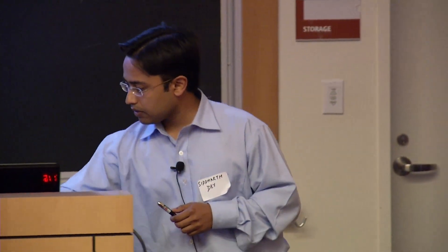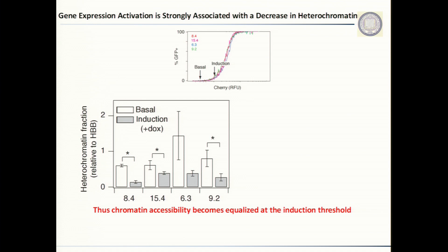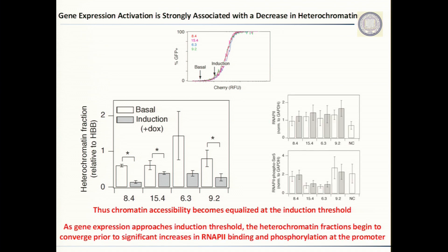We performed this for different epigenetic modifications and different clones and found a strong correlation between the heterochromatin fraction and the induction threshold. We also hypothesized that at the point of induction, the chromatin should be similar across all different clones when transcription just starts getting initiated. When we take a subset of clones that under basal conditions have different DNase-1 sensitivity values, at the point of induction the chromatin tends to get equalized across all these clones. When we ChIP for RNA Pol2 or phosphorylated RNA Pol2 at the basal induction state, we see no statistically significant increases, suggesting that these latent clones activate gene expression by opening the chromatin, and only after the induction state does the transcriptional machinery come in.